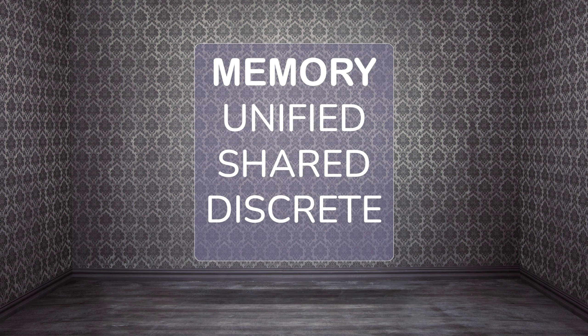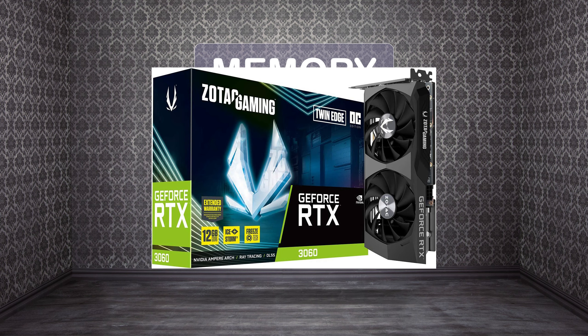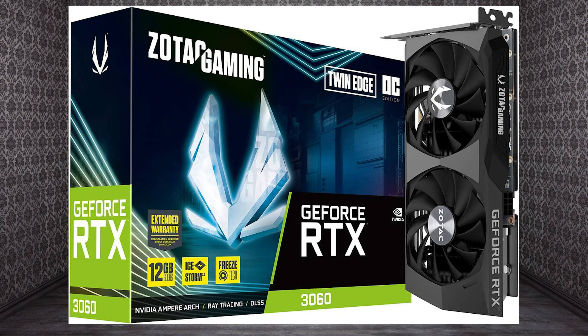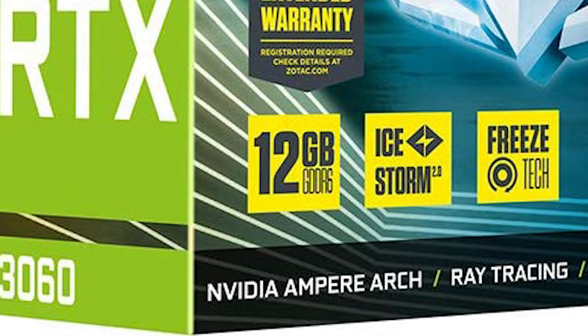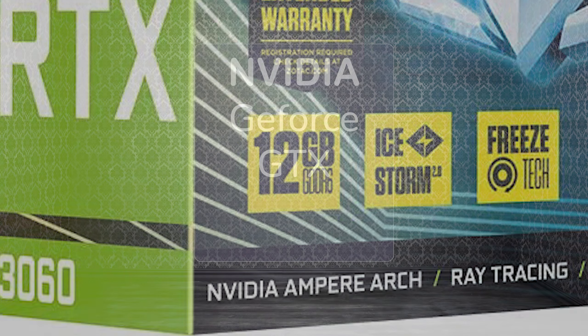We start off by considering memory. There are three architectures of memory to consider. One is unified memory, which is found in Apple devices. The second is shared memory — if you have a Windows PC with a discrete graphics card, you are probably using shared memory. And then there is the discrete graphics card memory. This is the memory number on the box when you buy the graphics card, and that is what we're really interested in when it comes to stable diffusion — that's probably the most important number.